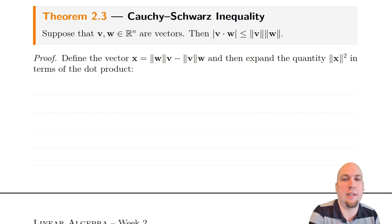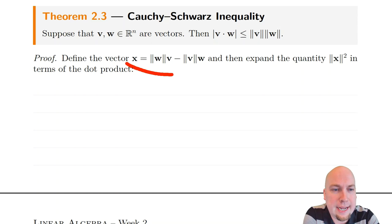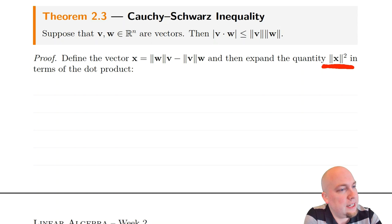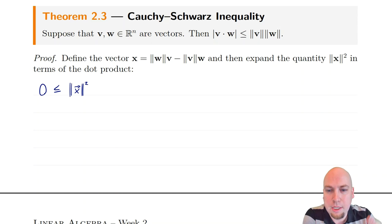So let's start. What we're going to do first — this is the weird step — we're going to introduce a new vector x, which is defined as: x equals the length of w times v minus the length of v times w. V and w are the vectors we care about. The short answer for why we introduce x is it's going to help us. What we're going to do is look at the quantity: the length of x squared.